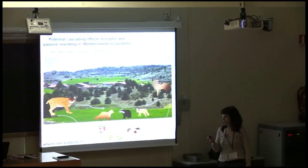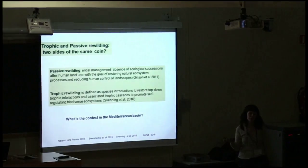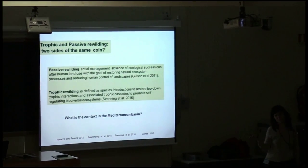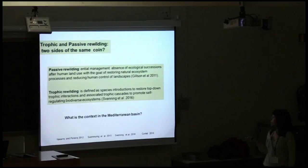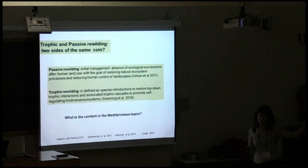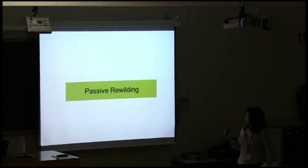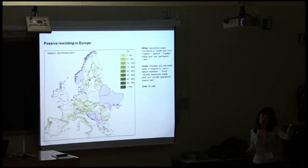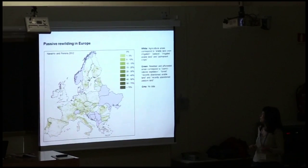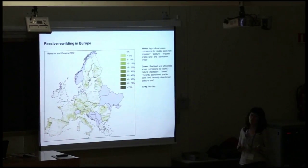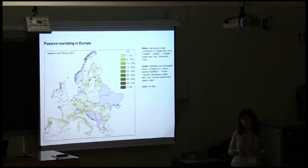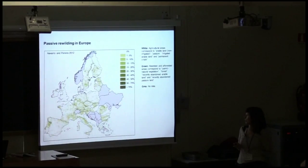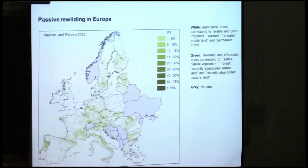I'm not going deep into the definitions of trophic and passive rewilding because we have already seen those. I'm going to go directly to what is the context in the Mediterranean Basin. Here you can see in this map that passive rewilding — the recovery of vegetation in pasturelands or abandoned lands that were previously cultivated — is frequent in Europe and also in the Mediterranean Basin.